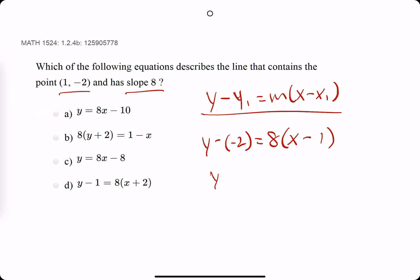We work things out a little bit. Negative, negative. Y minus negative 2 is y plus 2. We distribute the 8. We get 8x minus 8.